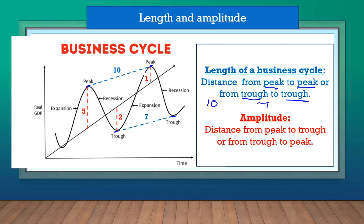The amplitude is the distance from peak to trough, or from trough to peak. It's not as straightforward as the length. When you calculate the amplitude, you must first go from peak to the trend line — that gives you 5 — and then from the trend line to the trough, which gives you 2. Adding 5 and 2, you get an amplitude of 7.